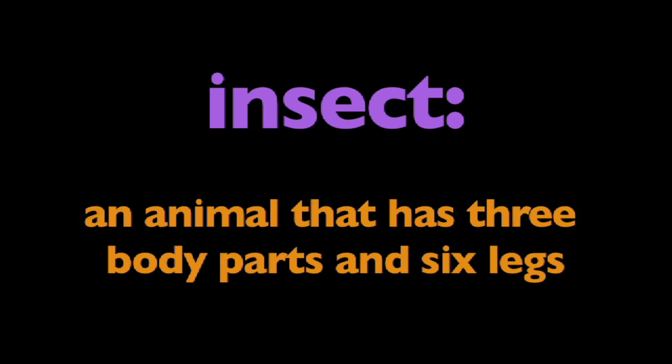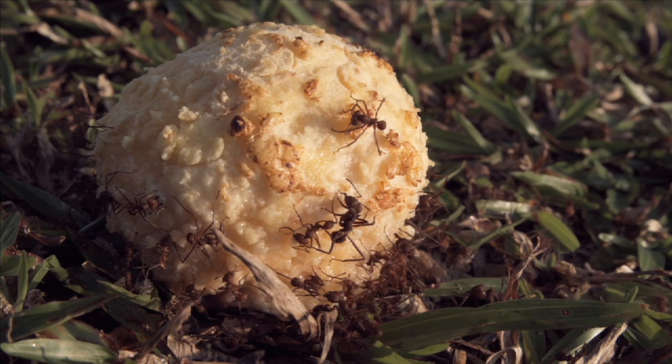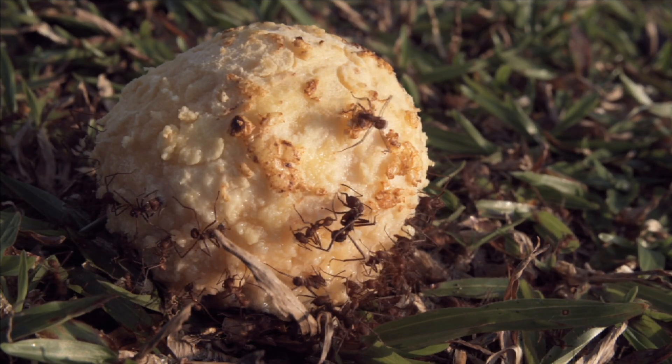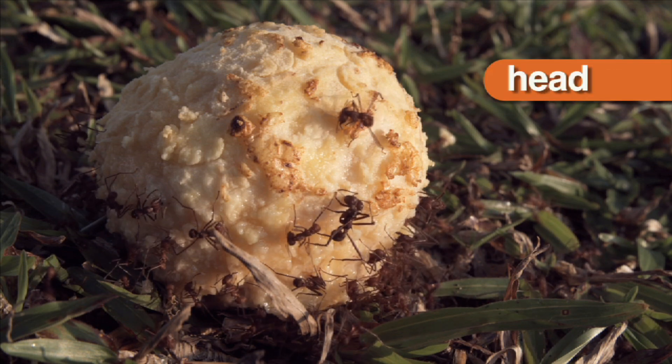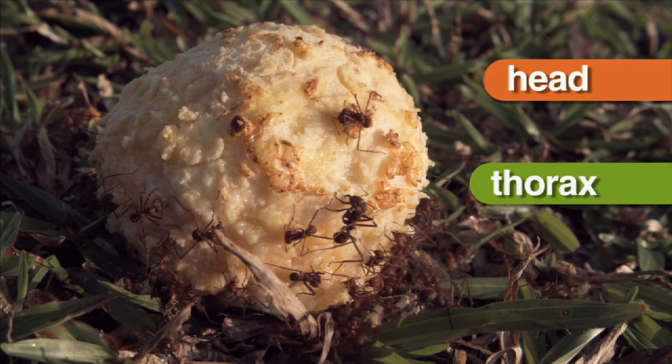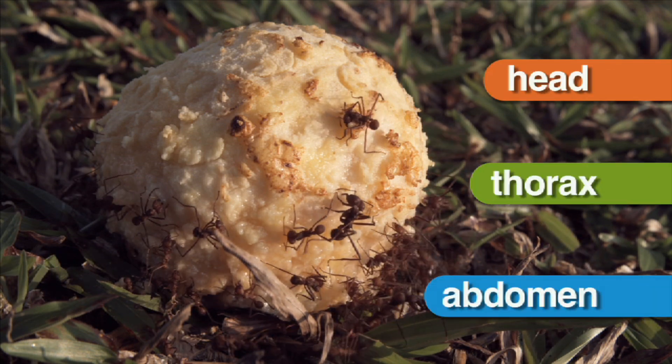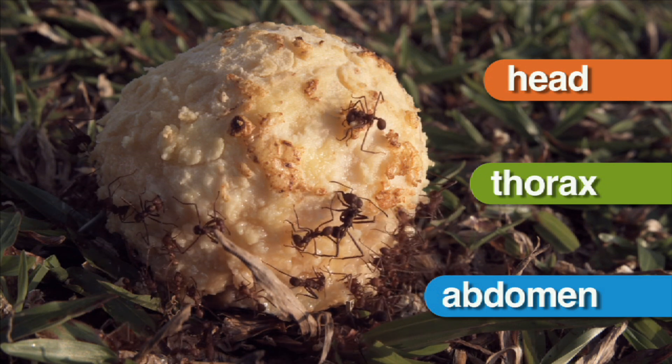In this program, we're going to learn about insects. What is an insect? An insect is an animal that has three body parts and six legs. An ant is an insect. The three parts of its body are the head, thorax, and abdomen. It has six legs.